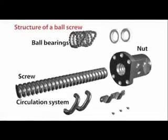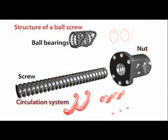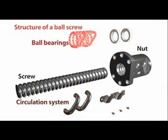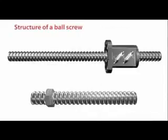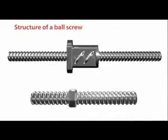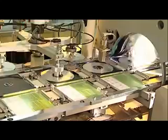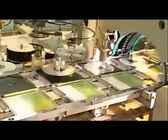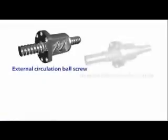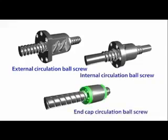Ball screws are composed of screws, nuts, a recirculation system, and ball bearings. They are low friction transmission elements that can be used to convert rotational motion to linear motion, or to convert torque to axial reciprocating action. There are three types of ball screws, which differ in how their ball bearings circulate.